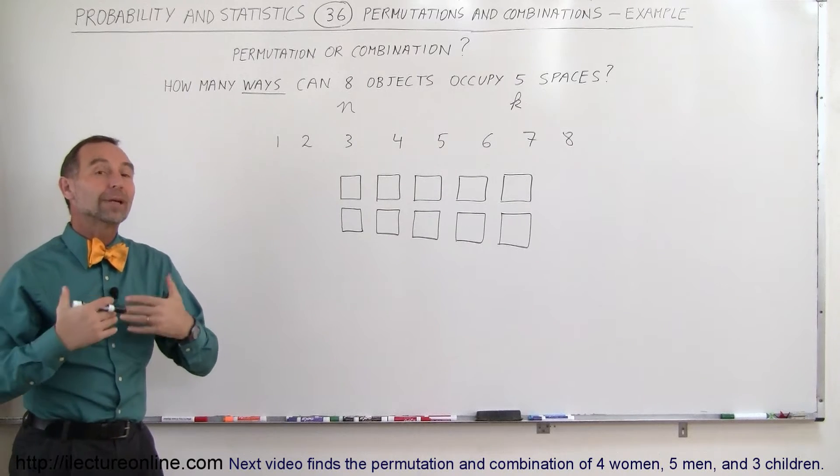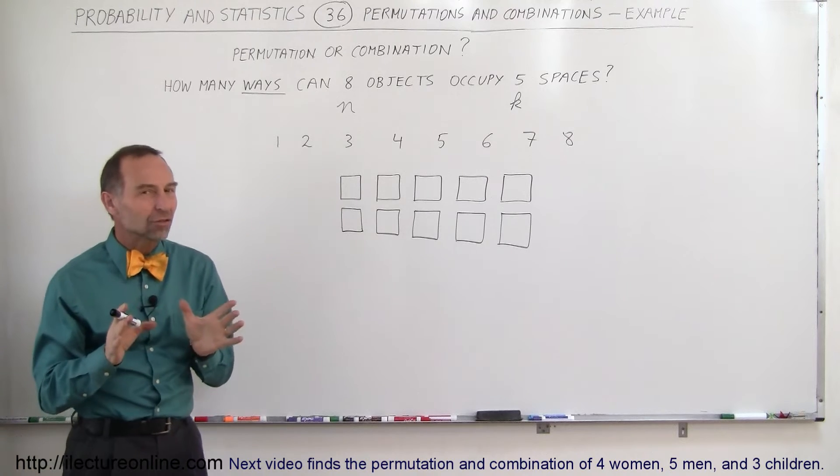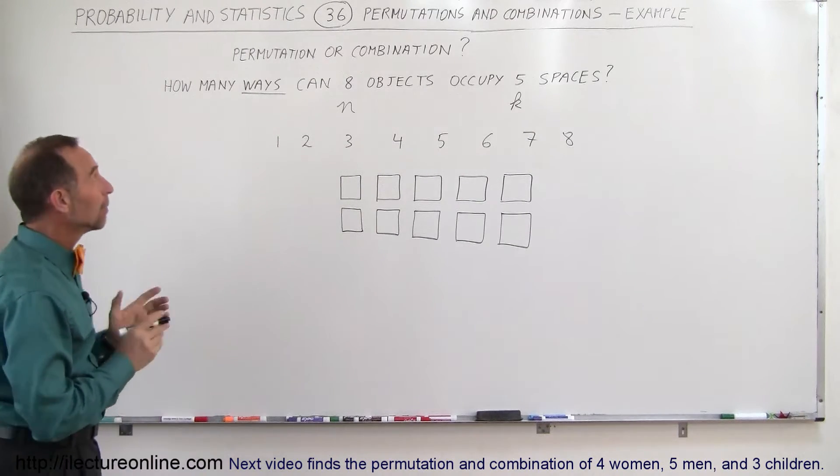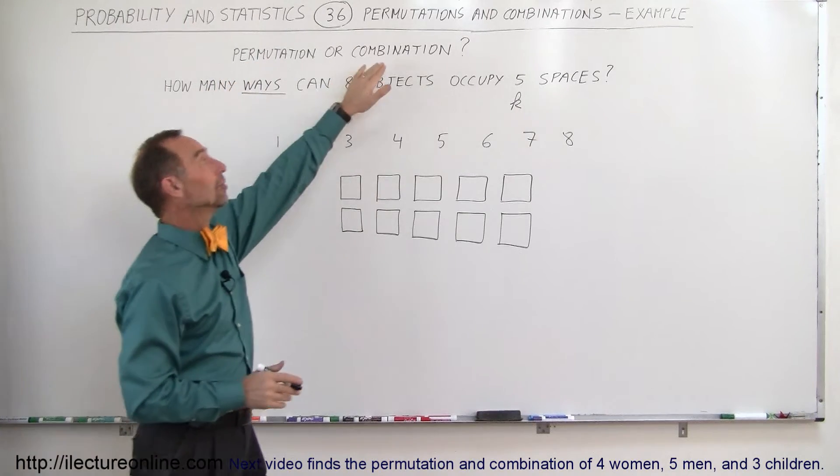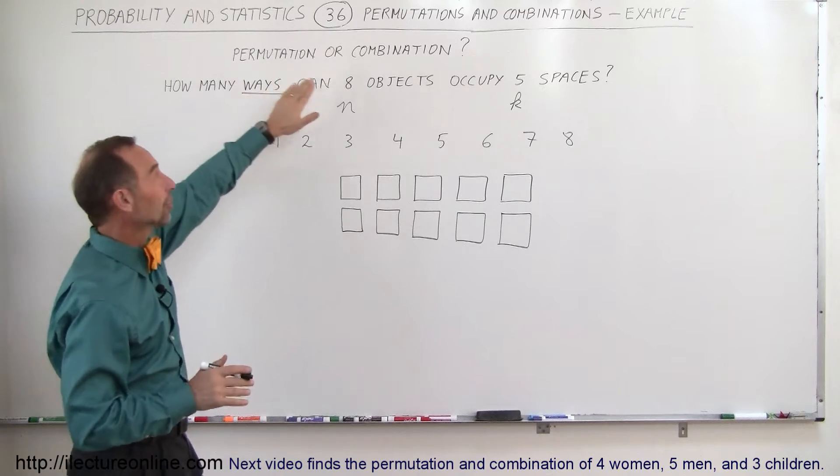Welcome to Electron Online. Now we're going to do an example on permutations and combinations. In this particular case, we're going to try and figure out which of the two we're actually trying to find. Remember, permutations the order matters, combinations the order does not matter, and usually there's way more permutations than there are combinations.